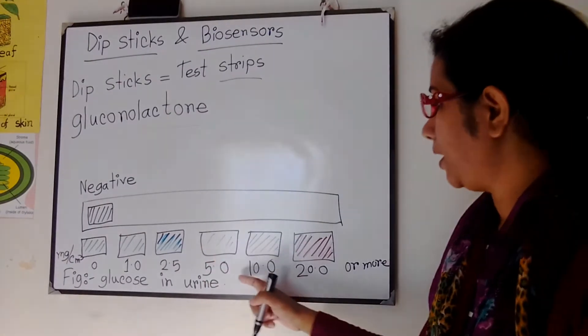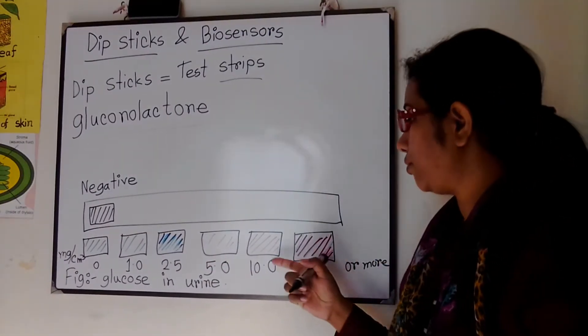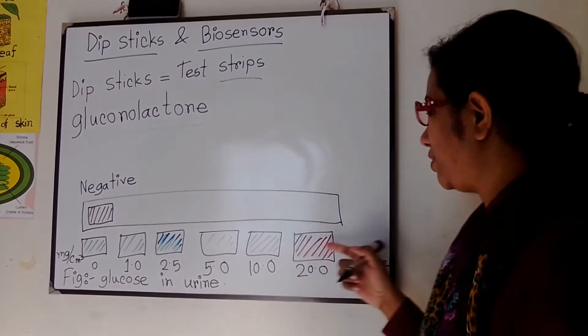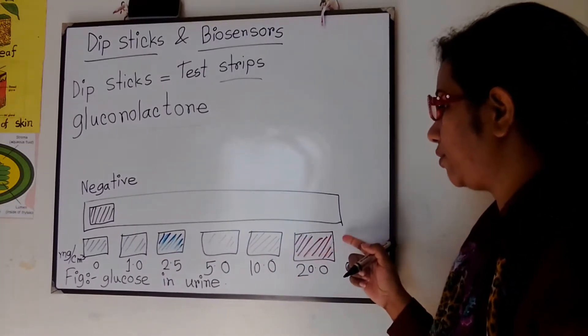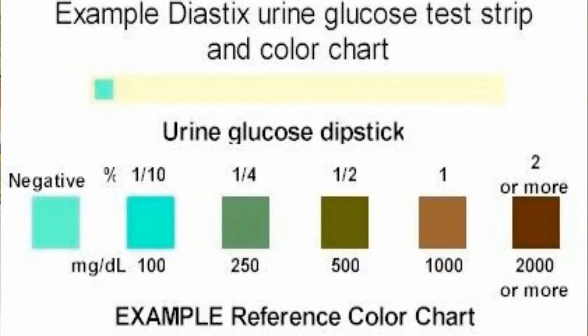And this one is 2.5, and 10, and as high as 20 or more. So you can see this one is darker.